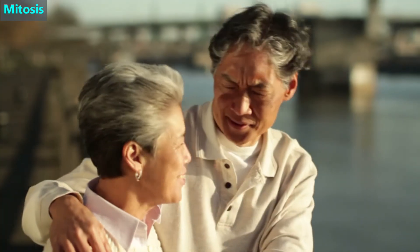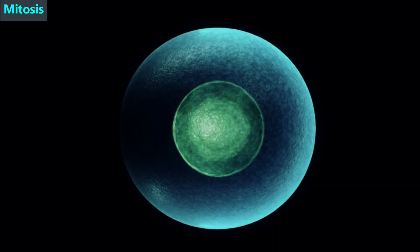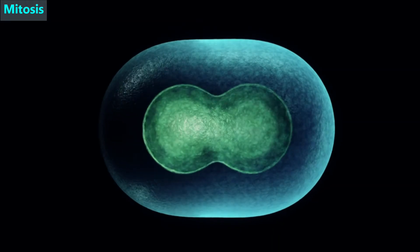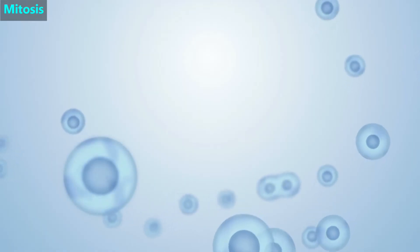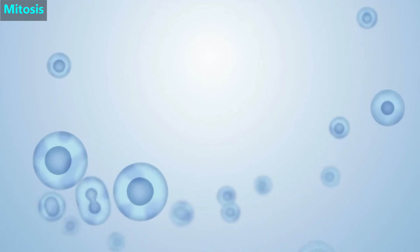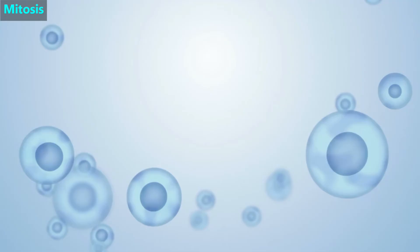A typical adult has over 30 trillion cells. To make more cells, our cells divide in half. Then each half grows back to the original size. Then those new cells can also divide, and this process continues to repeat as needed. This process is called mitosis.